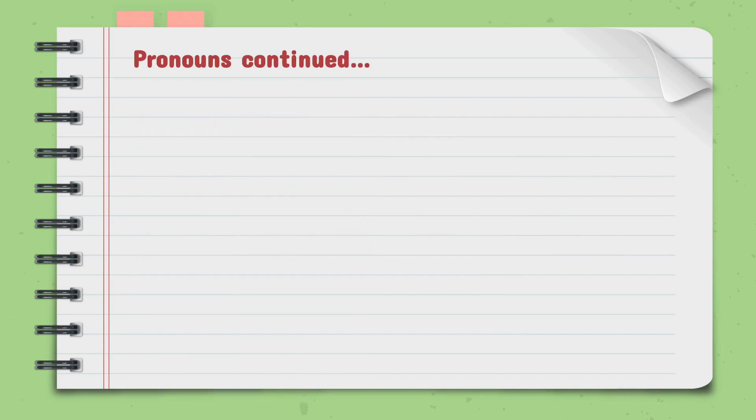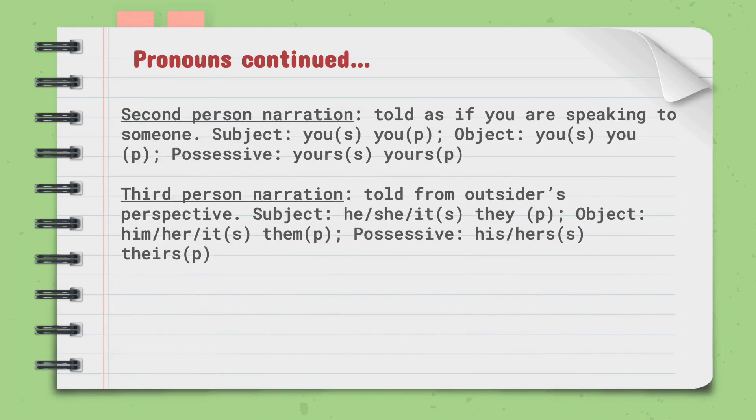Let us continue with pronouns. In second person narration, which is told as if you are speaking to someone else, the subject can be you, as singular, as well as plural. The object can be you, as singular, as well as plural. For possessive, yours can be seen as singular and plural.